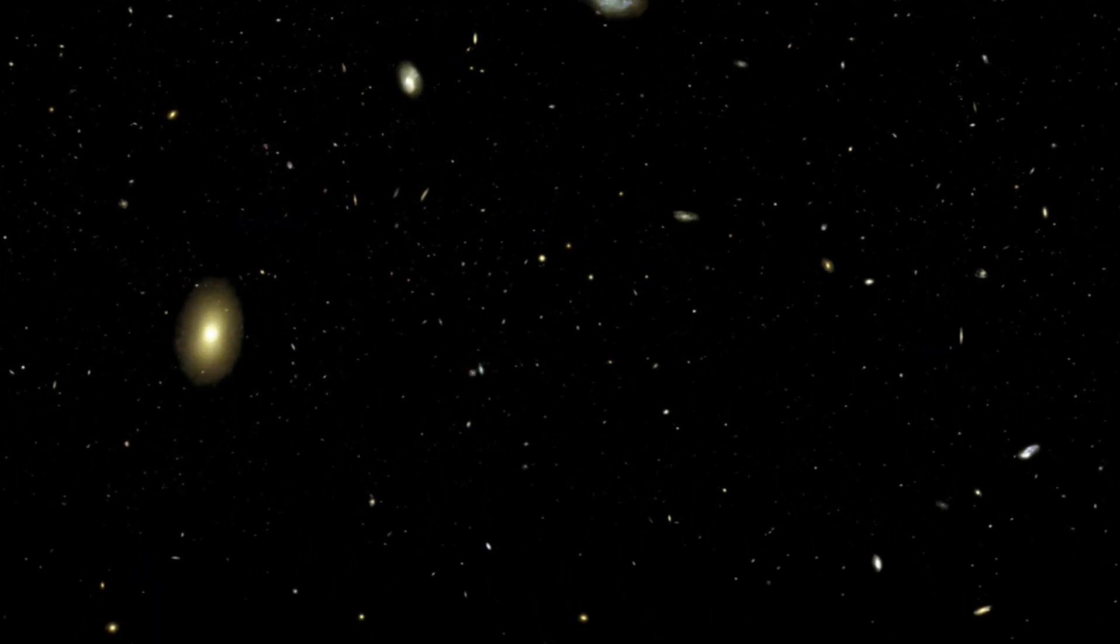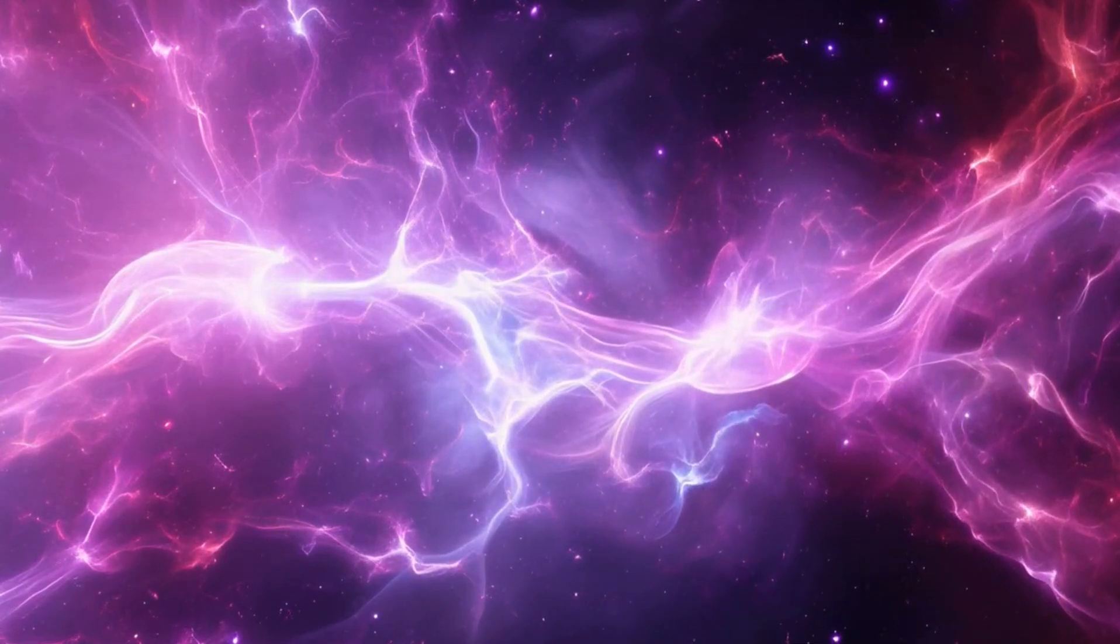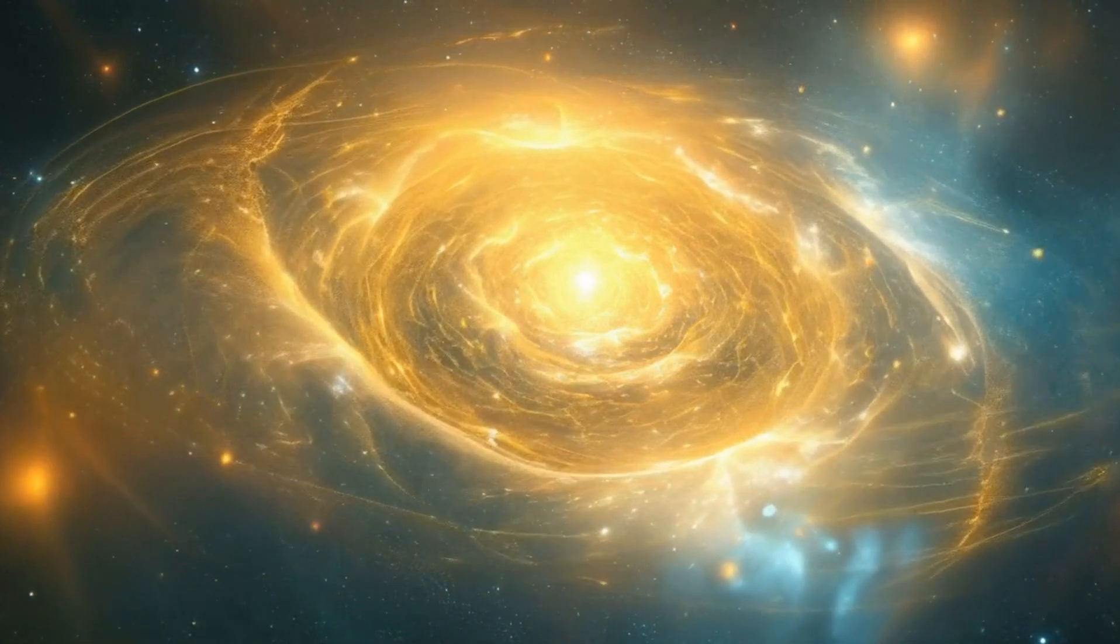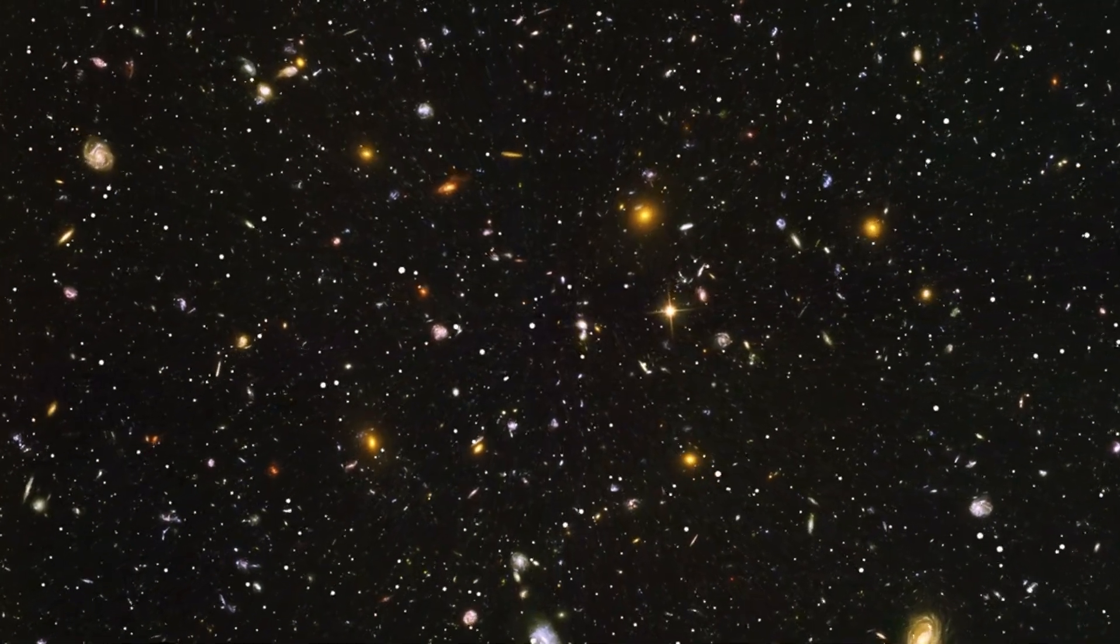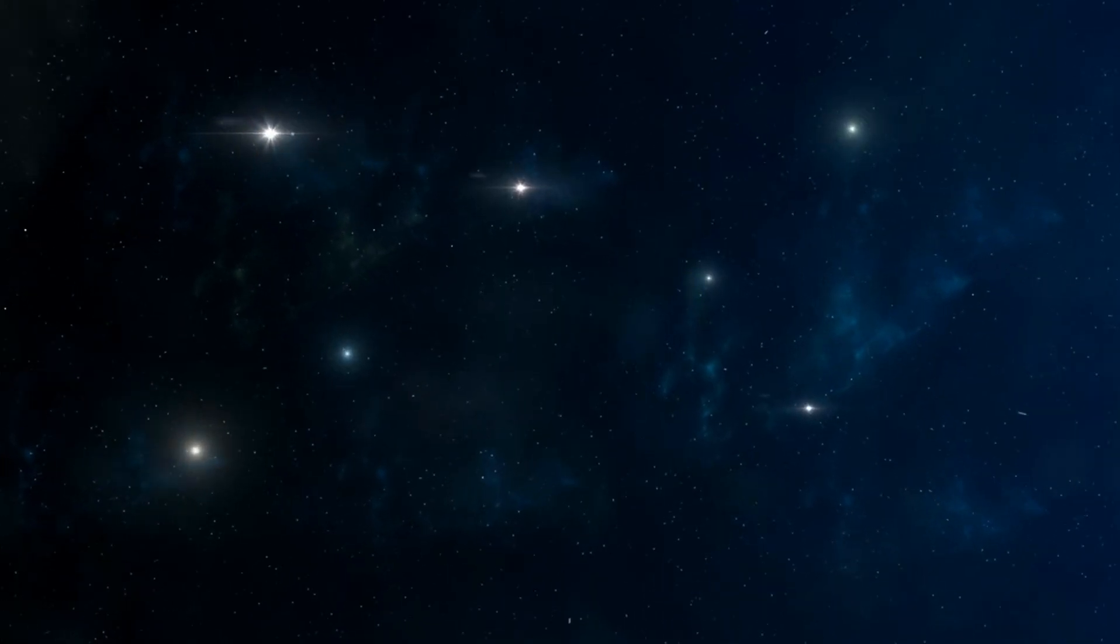Each month, it pinpoints the positions of a million galaxies, providing astronomers with a detailed blueprint of the cosmos. This map is not just a collection of points. It's a time machine that allows us to look back over the past 11 billion years and observe how the universe has expanded.